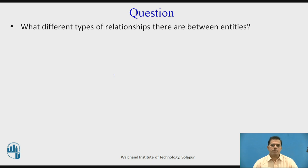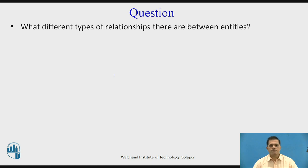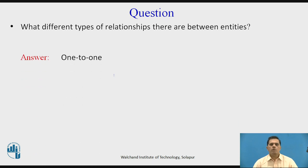After discussing these topics, there is a review question: What are the different types of relationships between entities? The answer is one-to-one, one-to-many, and many-to-many.